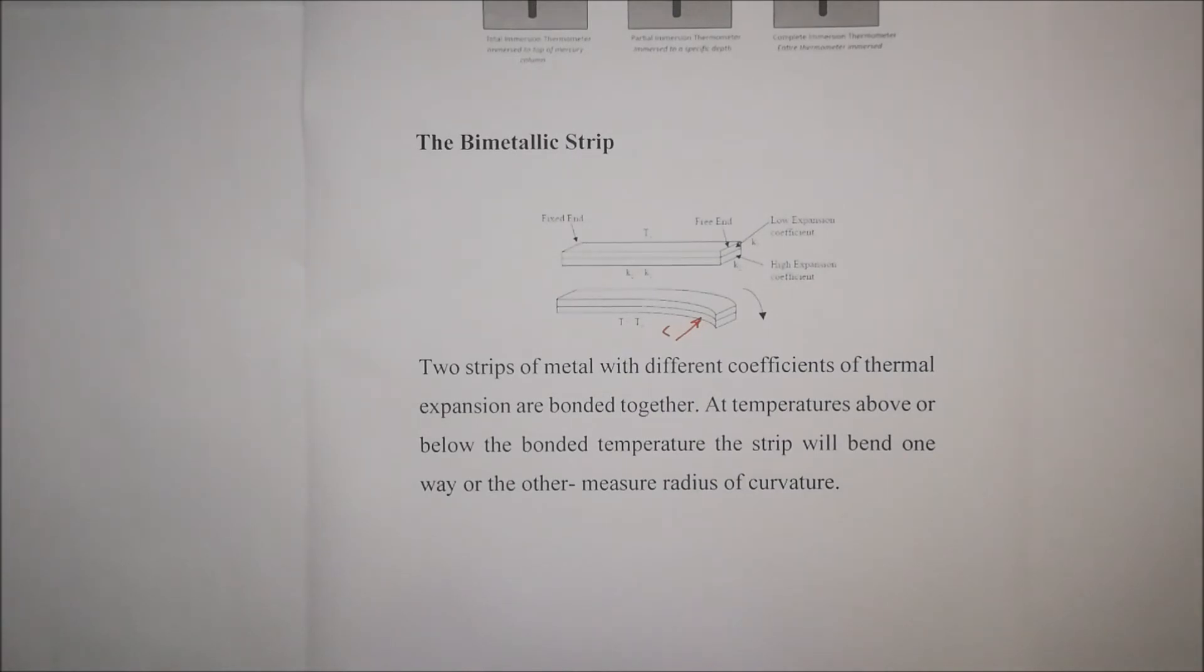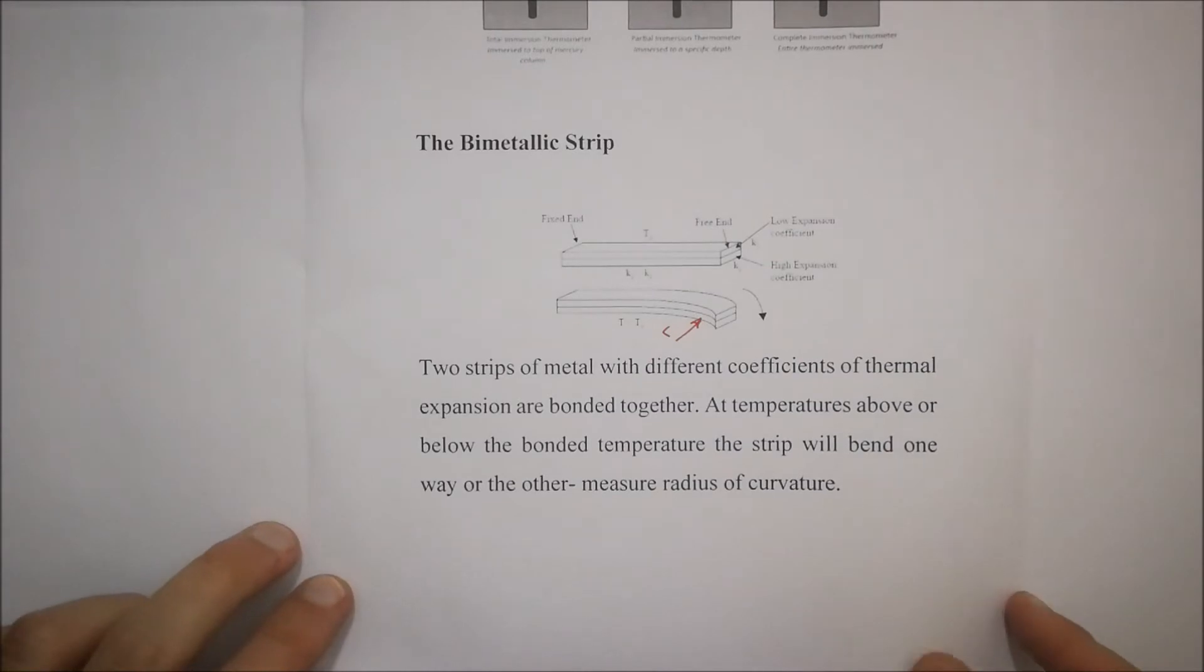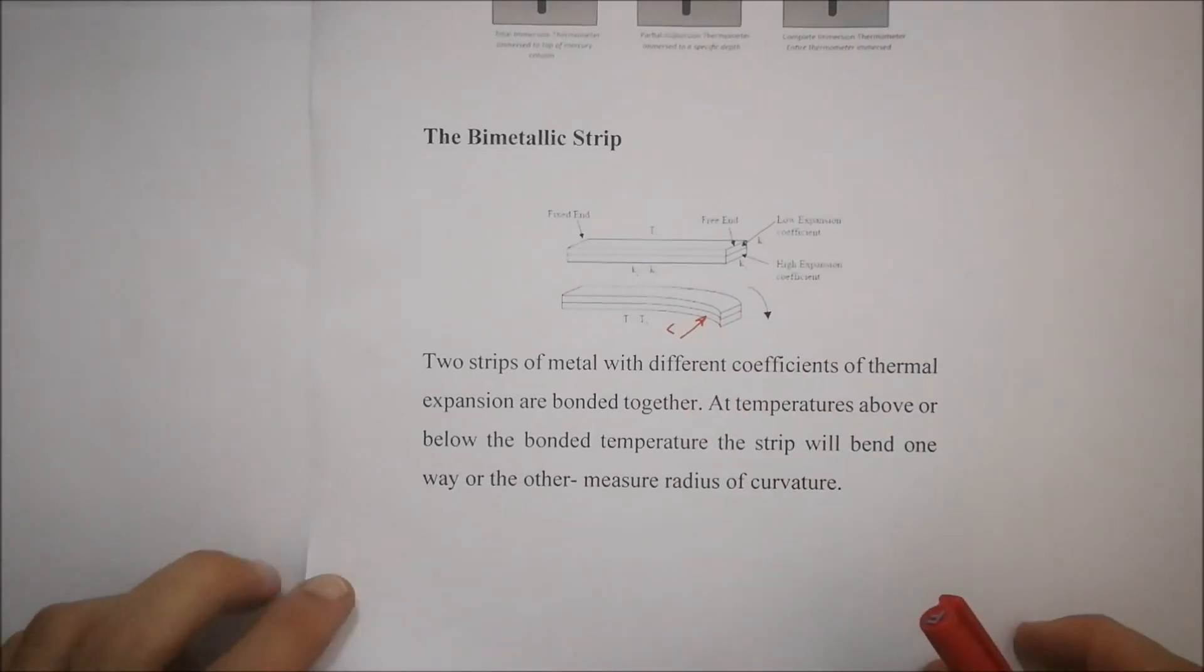There will be either an equation that will be related to that, or some graph that you could get this data from, to be able to correlate what the temperature is, depending on what that radius is.